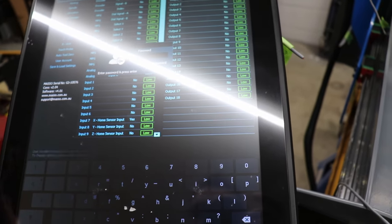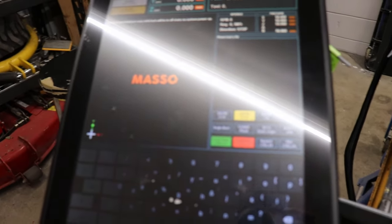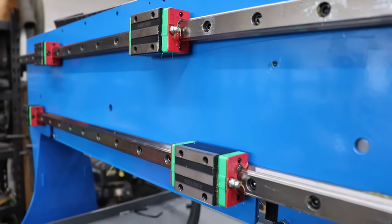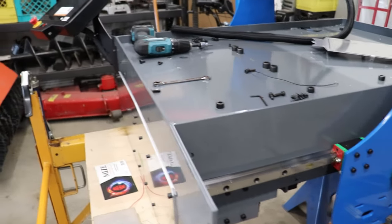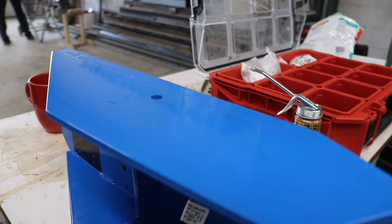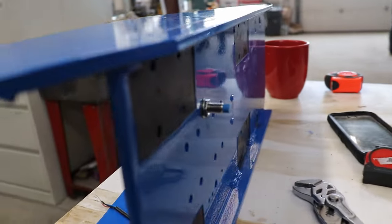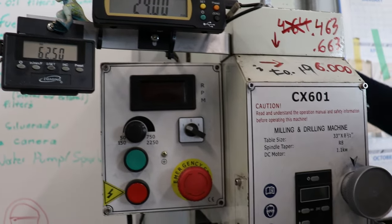Unfortunately we're going to have to remove the Y-axis assembly to finalize some of the installations. We need to add a bracket to the Y-axis for the cable carrier as well as install a homing sensor here in the Z-axis. Both of these are just much easier to do with the parts off the machine.